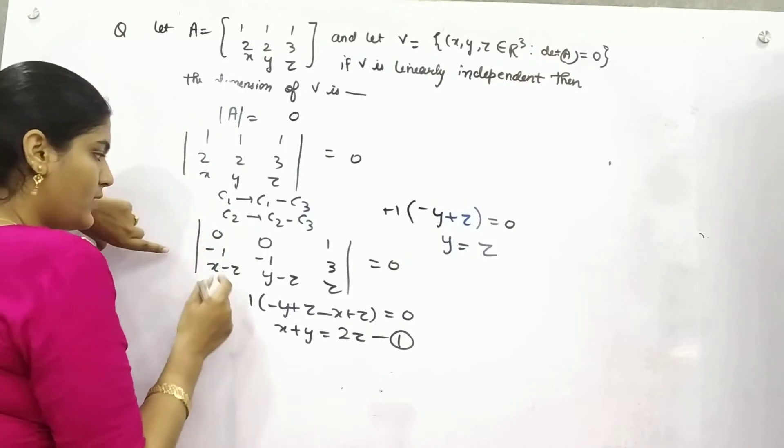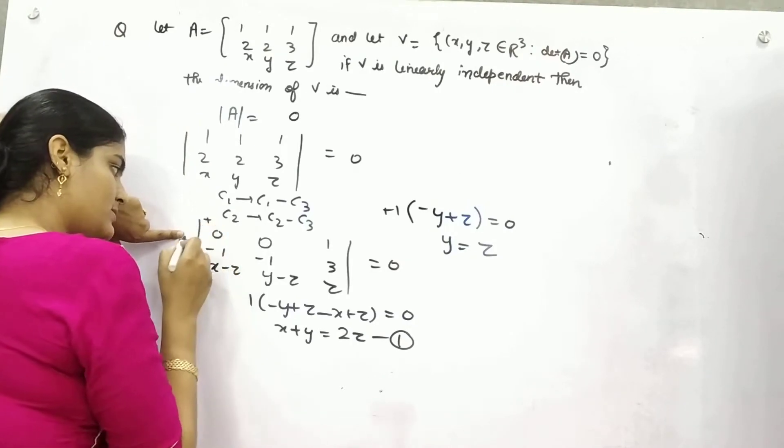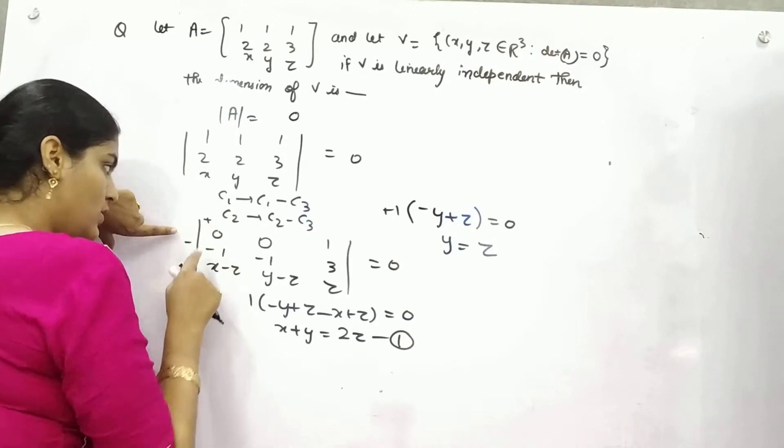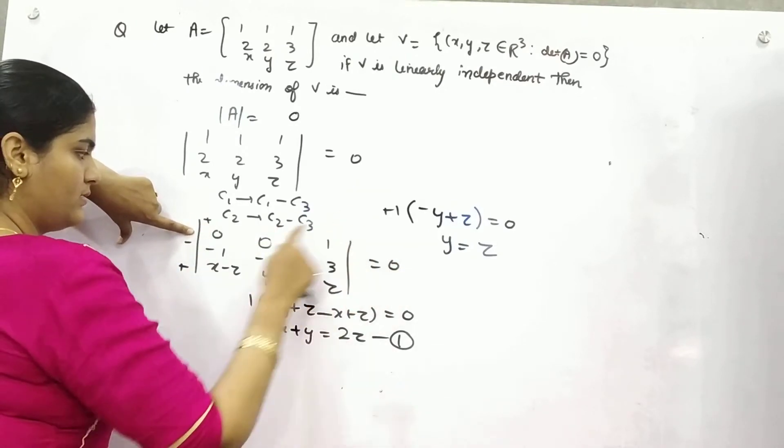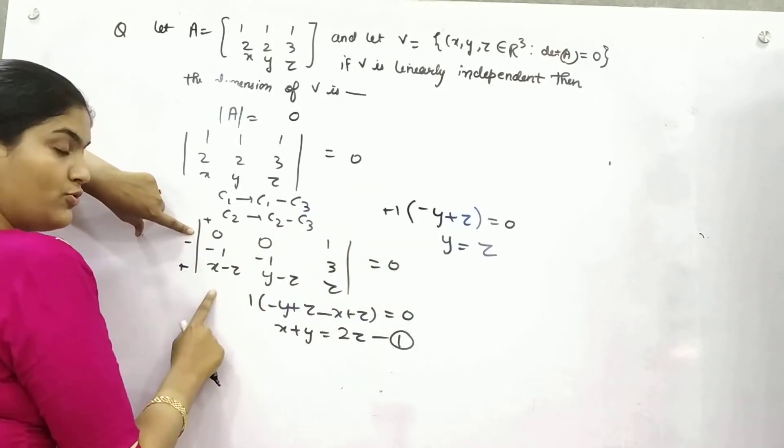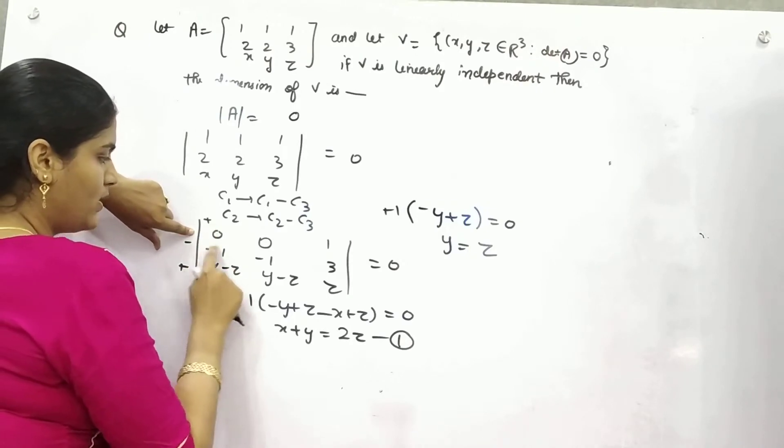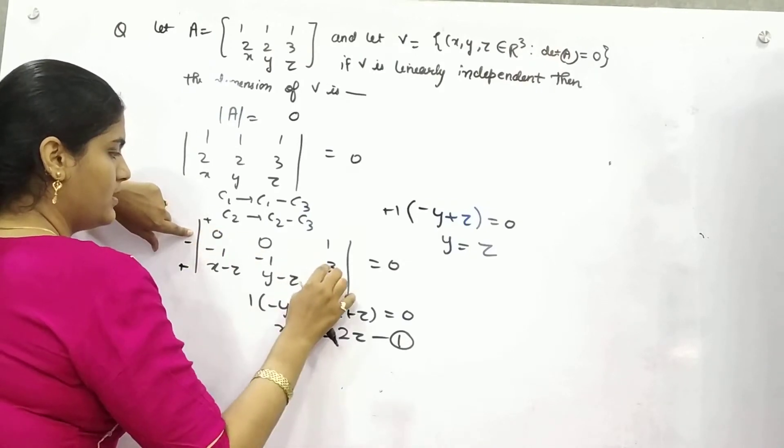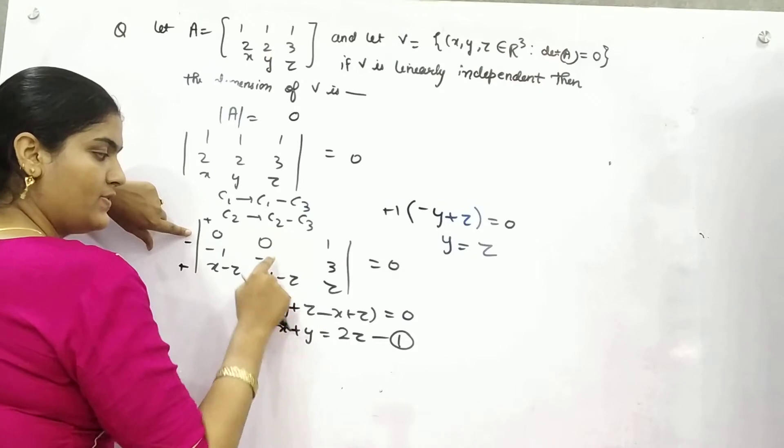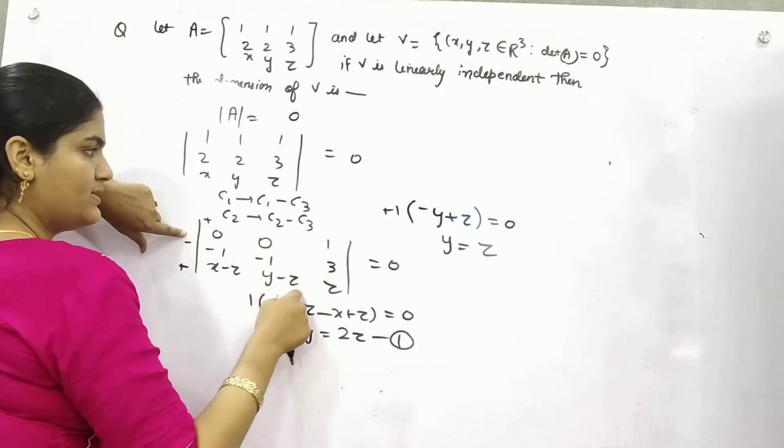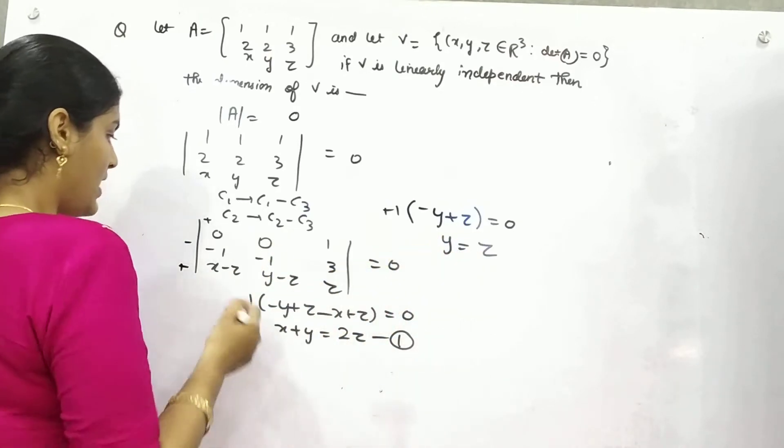What I did, you know, the first element is plus, this is minus, this is plus. So minus of 1—I expand it through c1. So minus of 1, I hide this. This is z, zero. Minus y plus z equals zero.